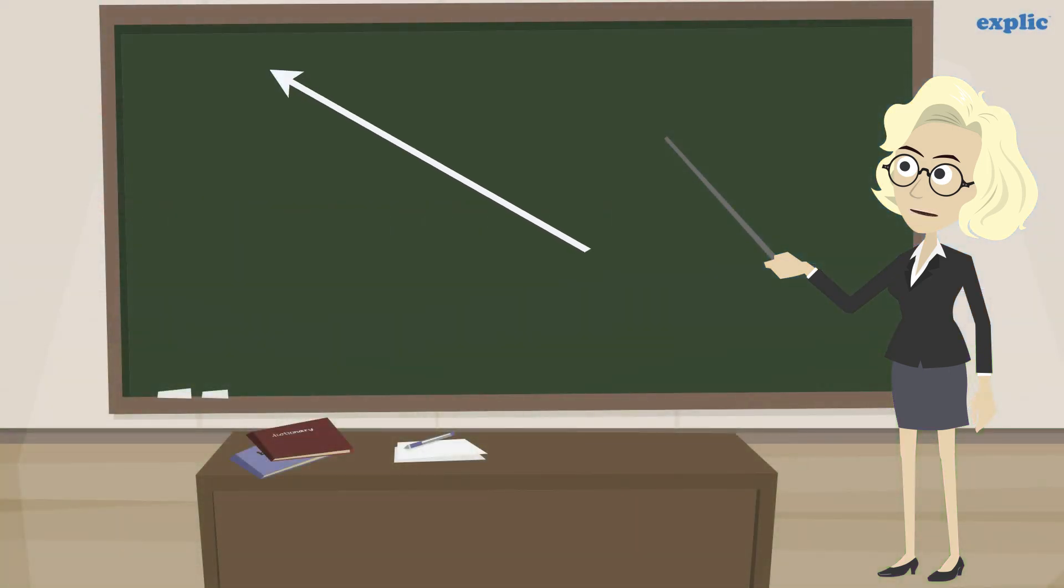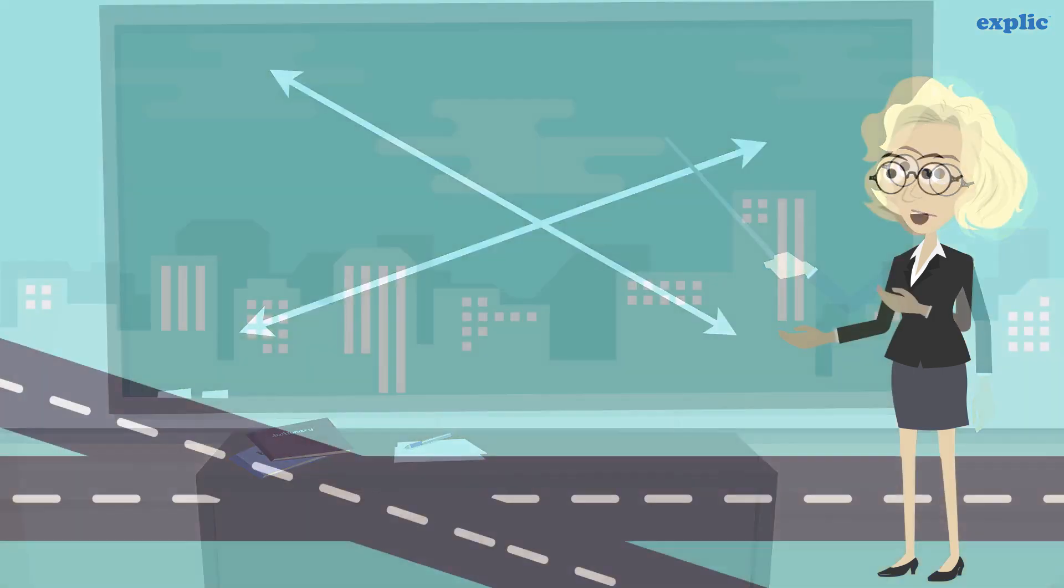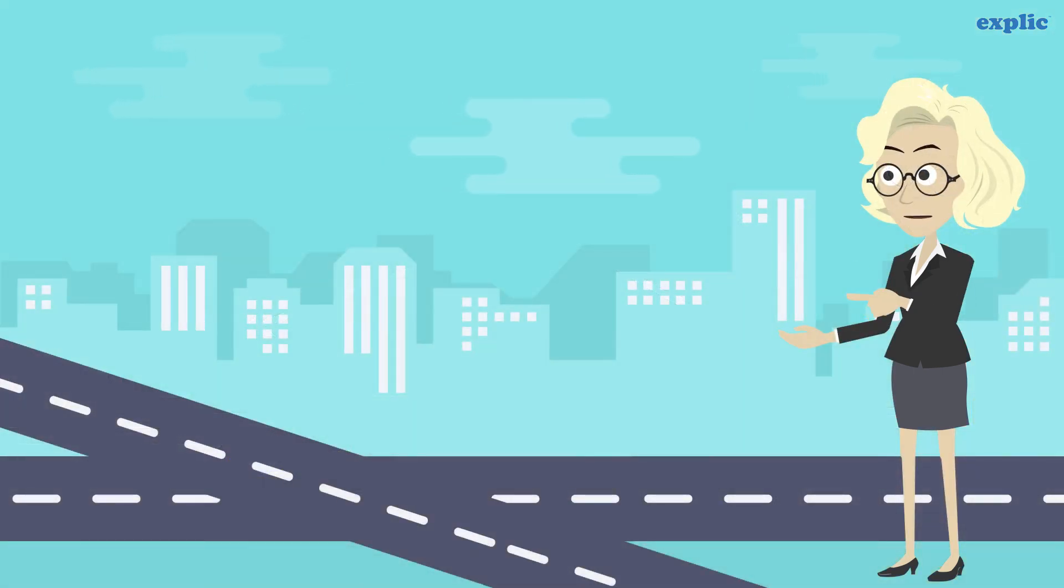When two or more lines cross each other, they are called intersecting lines. When two straight roads meet at a common point they form intersecting lines.